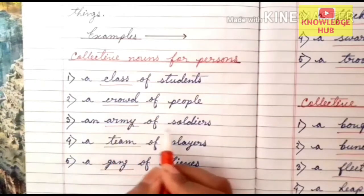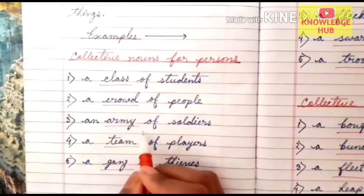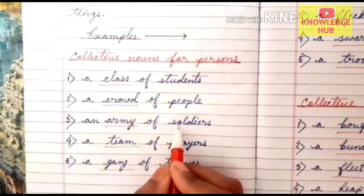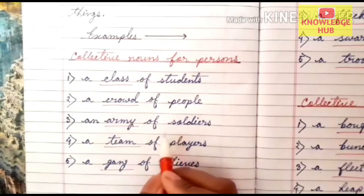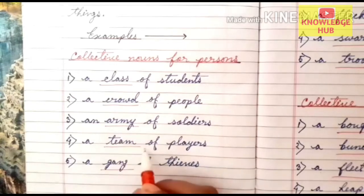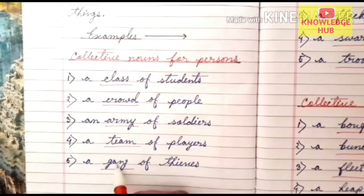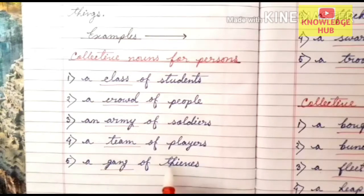An army of soldiers — here the word 'army' refers to the group of soldiers. A team of players — here the word 'team' refers to the group of players. A gang of thieves — here the word 'gang' refers to the group of thieves.